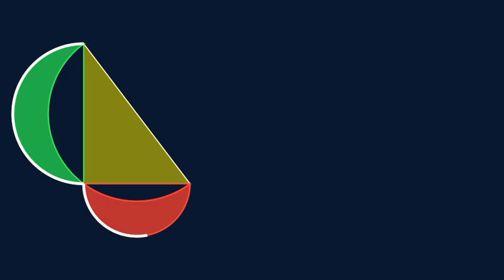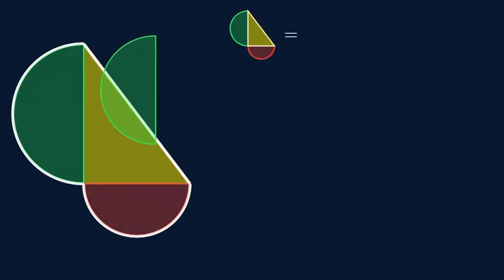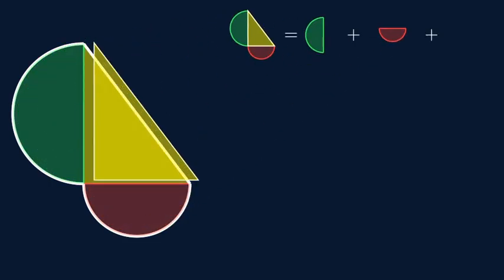Take a look at the whole figure. We can describe its total area in two different ways. On one hand, the area is the two small semicircles plus the triangle.